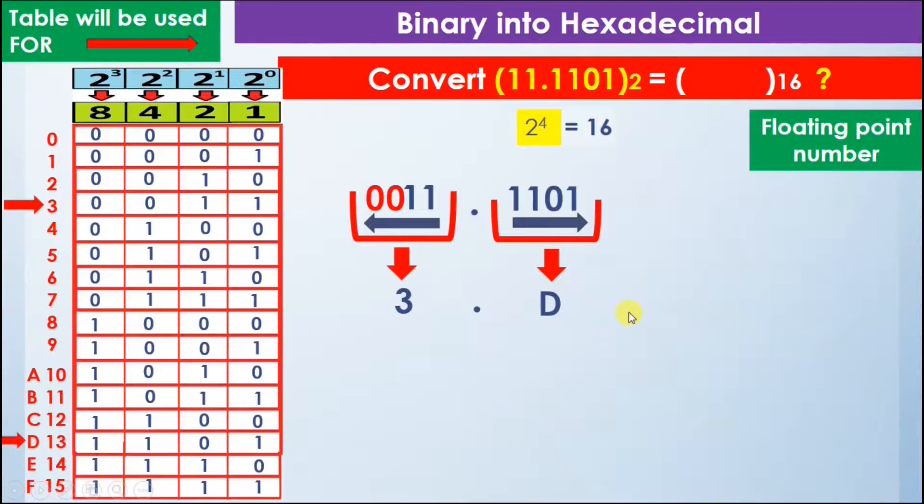Now we have calculated the value and no more digits are left, so the answer is 3.D. Or you can say that the binary value 11.1101 is equal to 3.D in hexadecimal. This is how we can convert a floating point number that is given in binary into hexadecimal base.